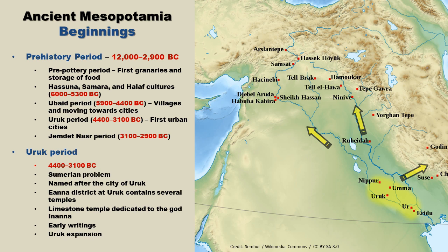The Uruk era was eventually displaced by the Jemdet Nasr period, generally dated from around 3,100 to 2,900 BC. It is around this time that the Bronze Age began in Mesopotamia. This brought huge improvements to agriculture, as bronze tools were much more reliable than stone and copper tools, and bronze also greatly improved weapons and armor. In the next period, we will cover the early dynastic period in Mesopotamia.